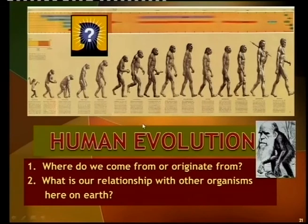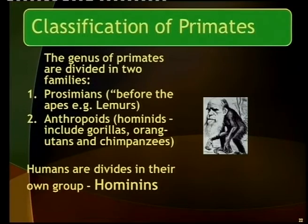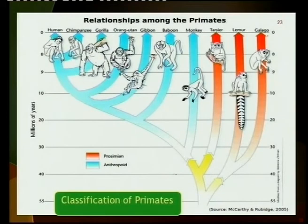Our second topic of the day — where do we as humans come from, where do we originate from, and what is our relationship to other species? They couldn't wait to get to human evolution! Primates are divided into two groups: the prosimians — meaning before the apes — and the anthropoids, which include gorillas, orangutans, and chimps, and then our own group, the hominids.